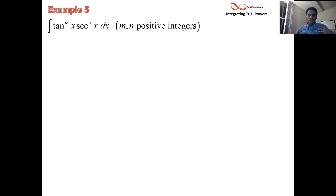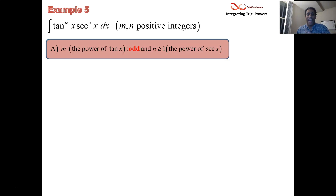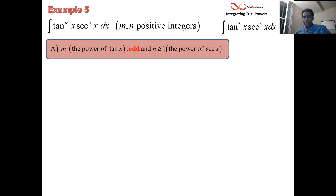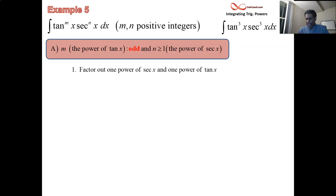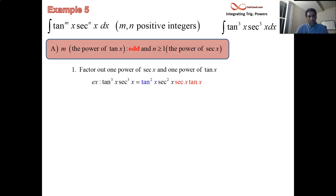So here we have part A, where the power of tangent is odd and there are some secant powers present. The example is tangent cubed times secant cubed — I'm calling this example five since we had four previous examples in this section. The power of tangent is odd, so we attack the method by factoring out one power of tangent and one power of secant. I need those secant powers available, which is why I require n ≥ 1. I'll color code the factored-out secant tangent in red.